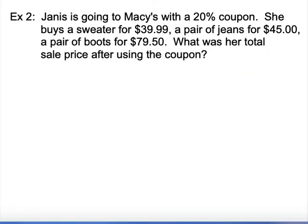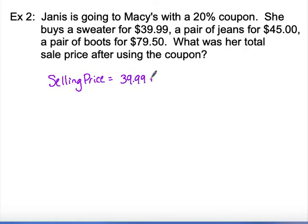Our second example: Janice is going to Macy's with a 20% off coupon. She buys a sweater for $39.99, a pair of jeans for $45, and a pair of boots for $79.50. What was her total sell price after using the coupon? First, we calculate the original purchase price: $39.99 plus $45 plus $79.50 gives us $164.49.